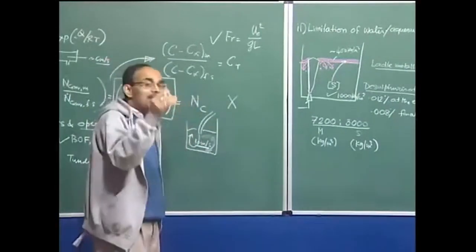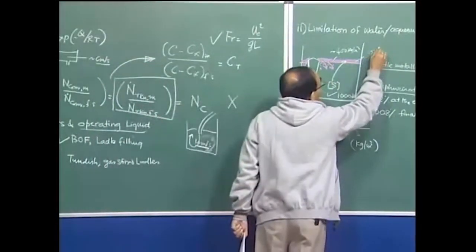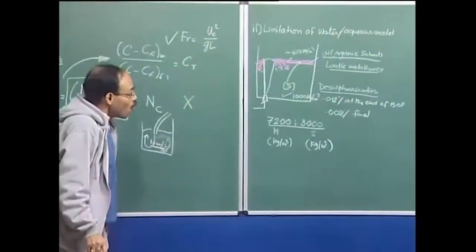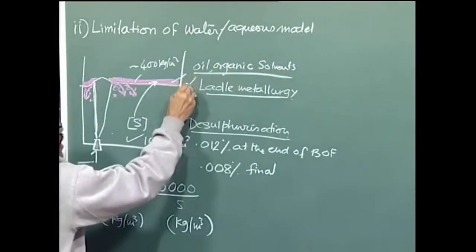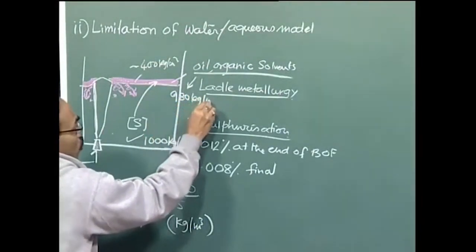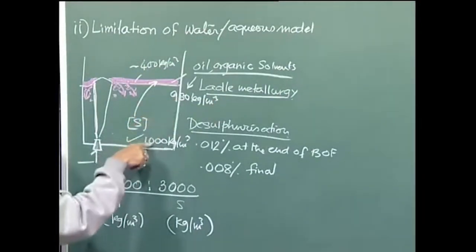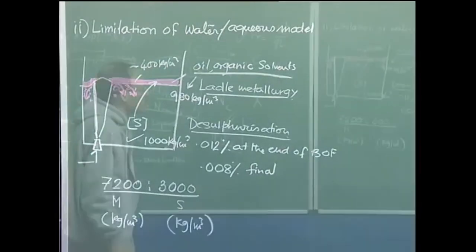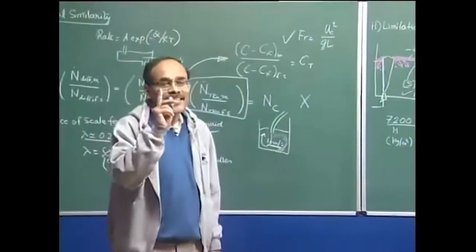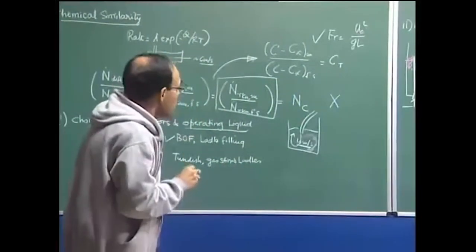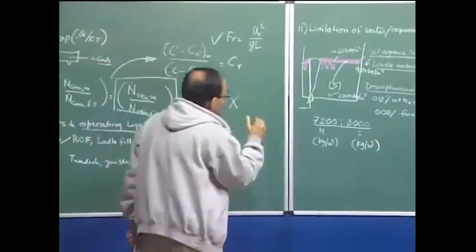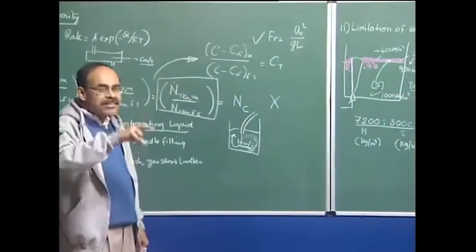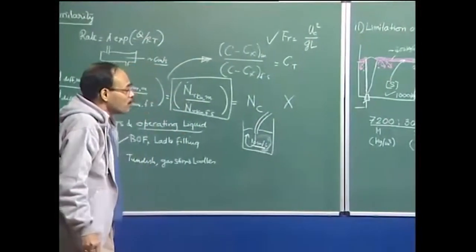Many have tried to investigate slag metal reaction kinetics using oil or organic solvents in the laboratory. But oil has a density of about 980 kg per cubic meter, which is very close to water at 1000 kg per cubic meter — absolutely different from the actual slag and metal density ratio. Similar things can be said about viscosity and interfacial tension. Therefore, the actual slag metal system cannot be replicated through water models in a laboratory scale system, and this inability means that multiphase interactions, slag metal interactions, and slag metal reactions really cannot be replicated in the laboratory by means of a water model.